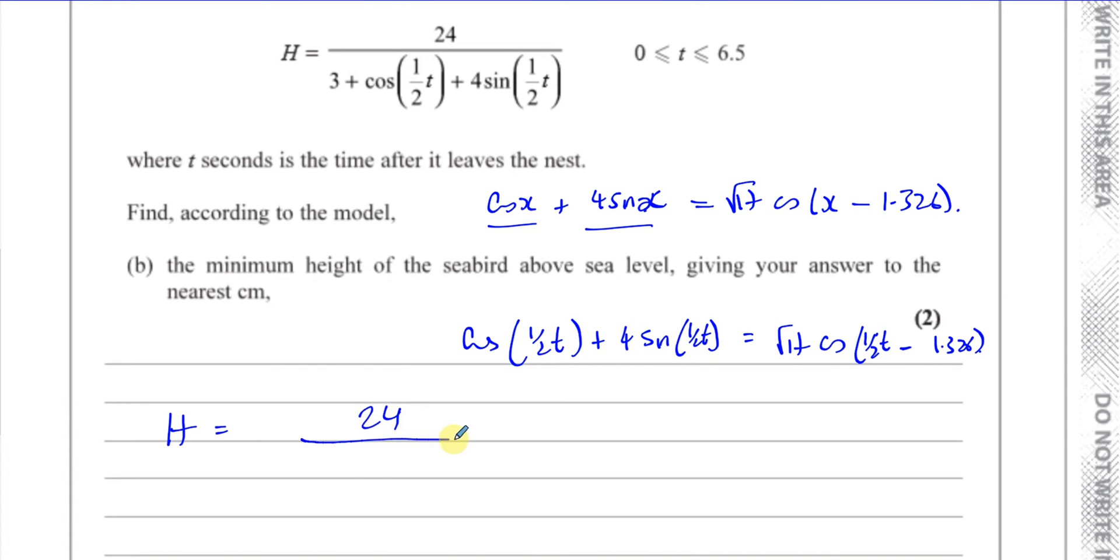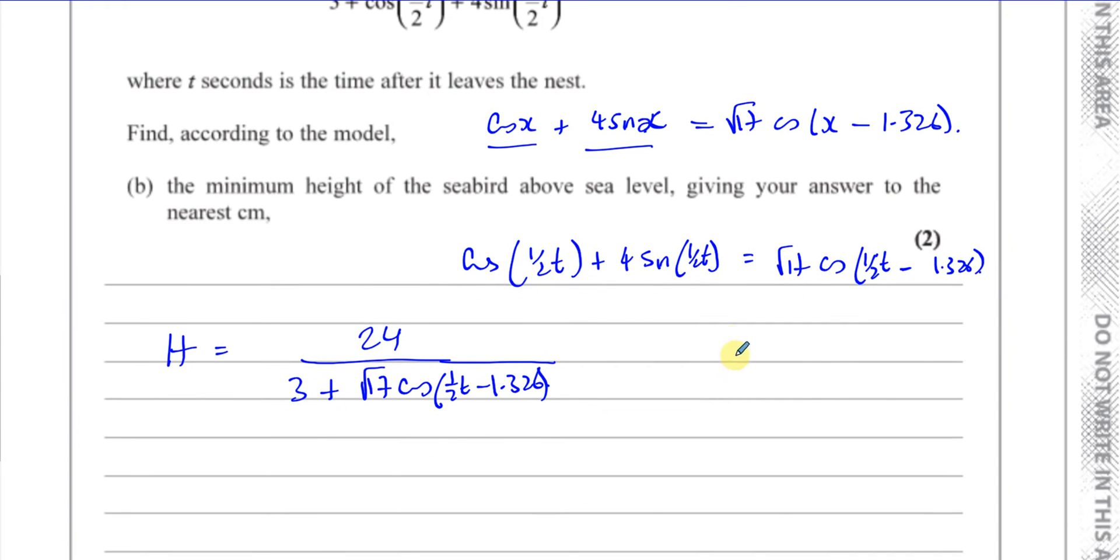So what I can say is my height can be rewritten as 24 over 3 plus root 17 times the cosine of a half t minus 1.326. Now that's much easier for me to find the heights, the minimums and maximums of this particular expression, because I know that root 17 times the cosine of anything, its maximum is going to be root 17 and its minimum is going to be minus root 17.